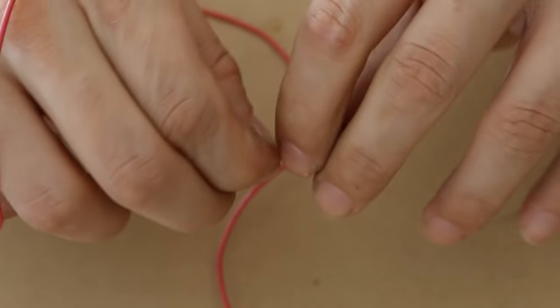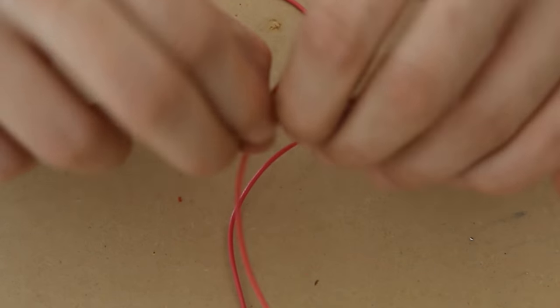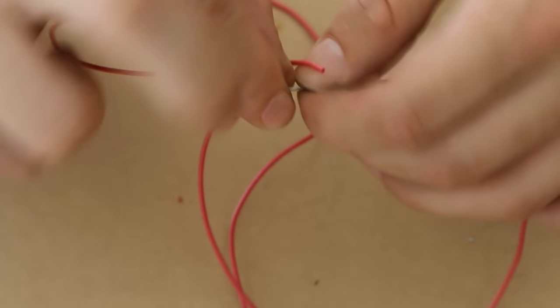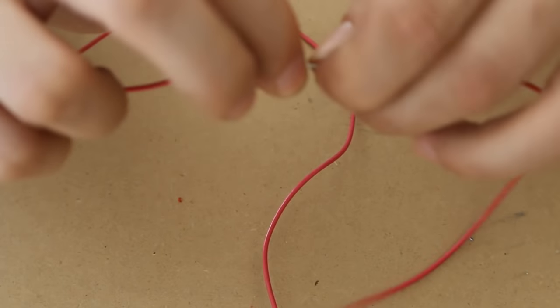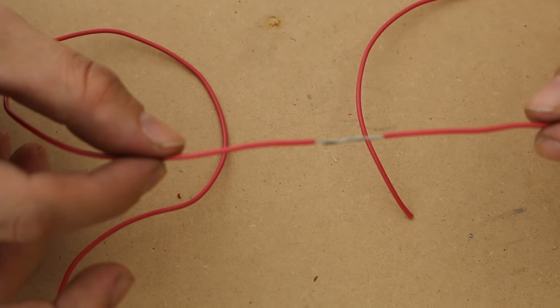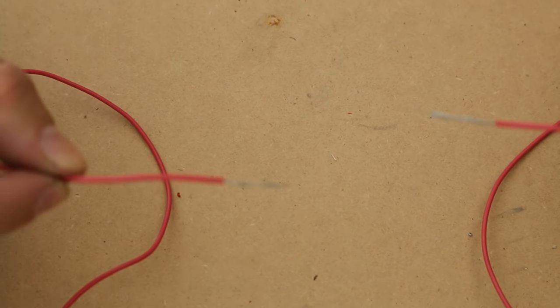And you twist both ends, or one end around the other and then the other end around the other. Okay, this is the commonplace style of soldering, but here's the problem.